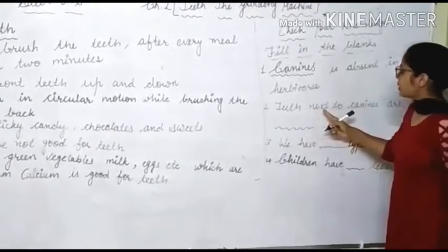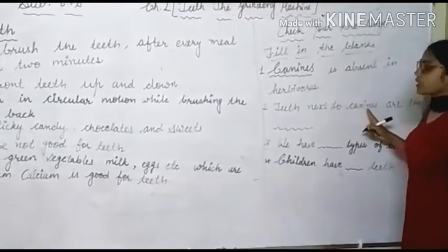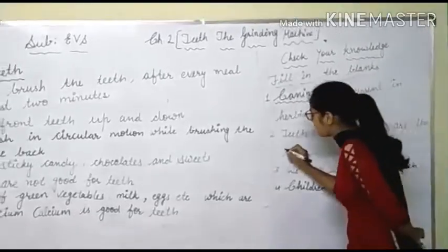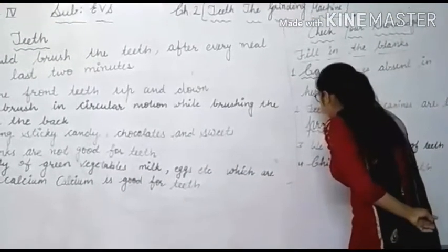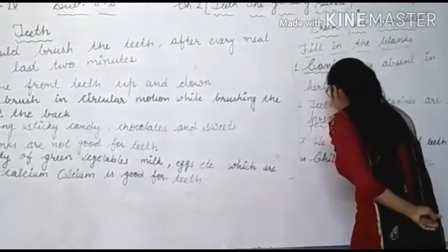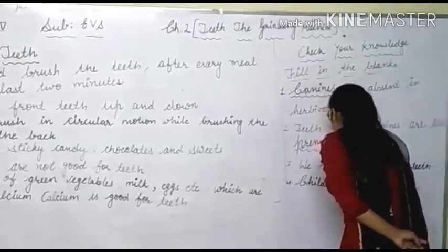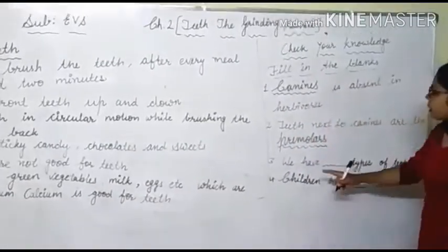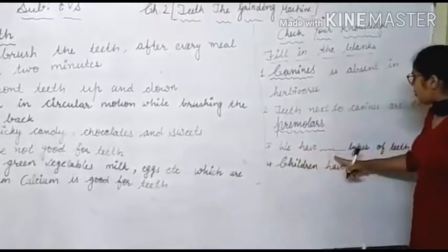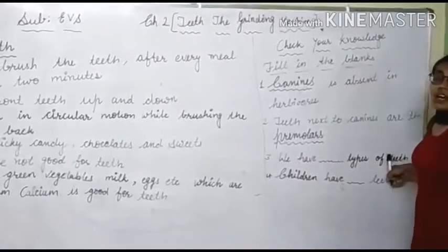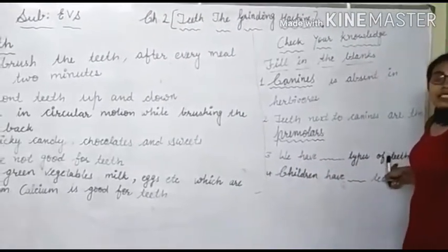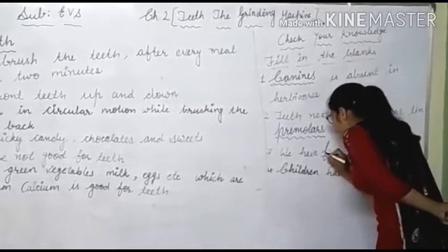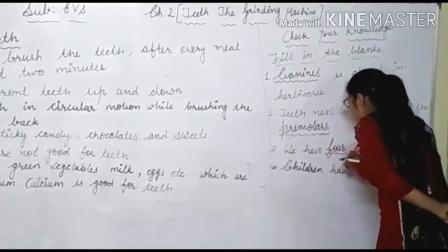Next blank: we have dash types of teeth. How many types of teeth do we have? We have four types of teeth.